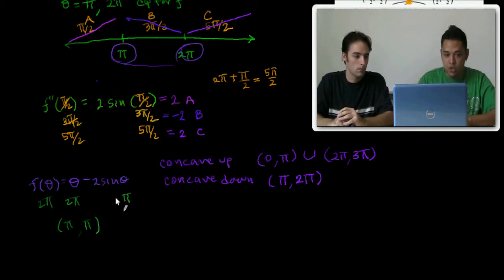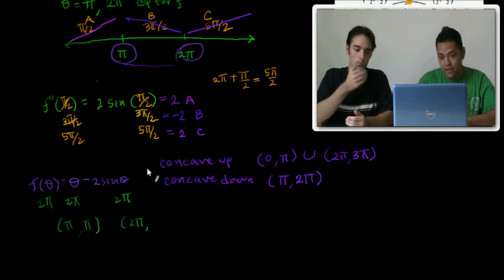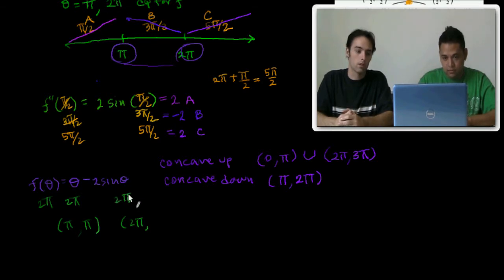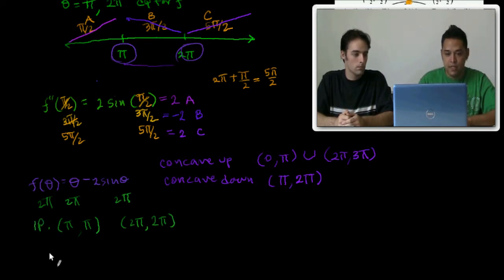What happens if I plug in a 2π? I'm plugging in a 2π, that's my x. The result would be a 0 for the sine function, and you'll get just 2π left over. Cool. So those are my two inflection points.